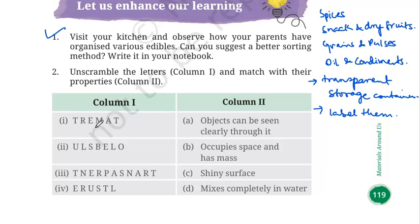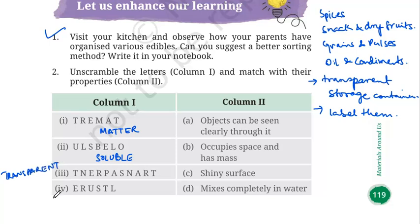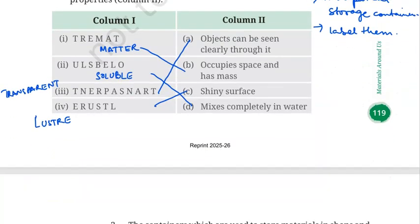Number two: unscramble the letters and match them with their properties in column two. The answers are: matter, soluble, transparent, and lustre. Matter occupies space and has mass. Soluble means it mixes with water. Transparent refers to objects you can see clearly through. Lustre means a shiny surface.